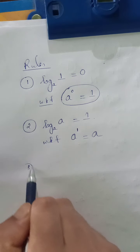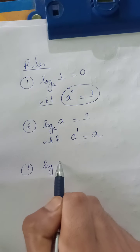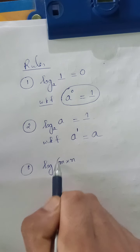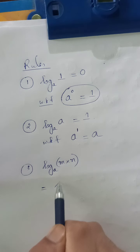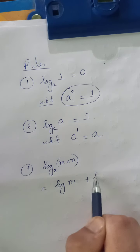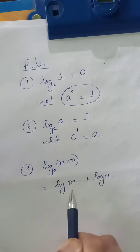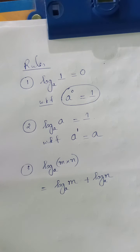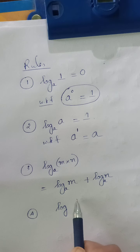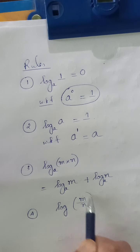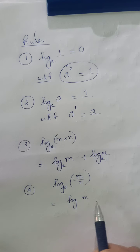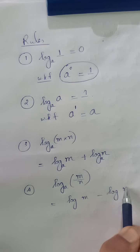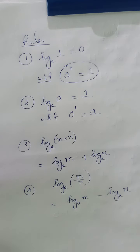Rule number 3: log of the product of two terms M times N, with base A, is given by log of M plus log of N, with the same base A in both cases. Rule number 4: log of M divided by N with base A is given by log of M minus log of N, with base A in both cases.